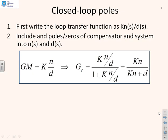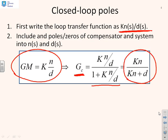The first thing I'm going to do is write the loop transfer function as Kn over d, and then I'm going to calculate the closed loop transfer function. I've written GM equals Kn over d. Therefore the closed loop transfer function for the block diagram given is Kn over d over 1 plus Kn over d. I can rearrange that into this form: Kn over Kn plus d.